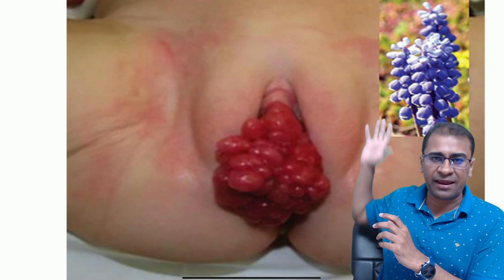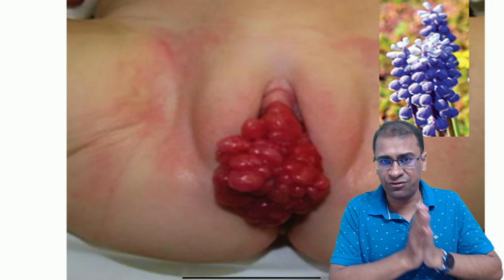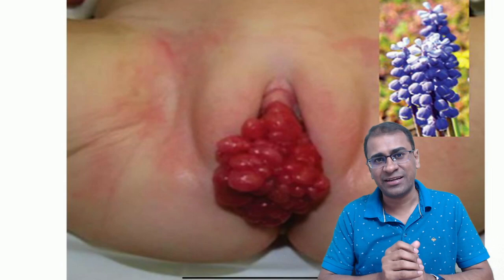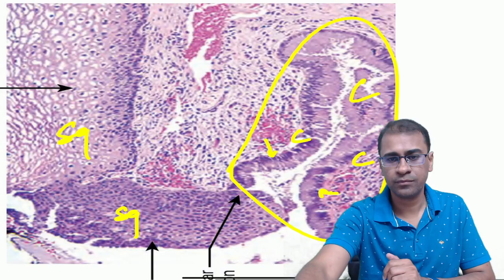This tumor in the vagina is called sarcoma botryoides. The word botryoides means it's a grape-like cluster. It is a tumor which is not very malignant but yes, it is seen in the age of less than 5 years and it shows a very important cell called a tennis racket cell.